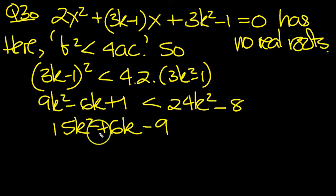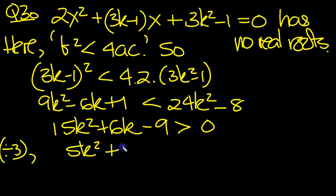So this expression is greater than 0. There's a common factor of 3, so divide by 3 all the way through: 5k² + 2k - 3.